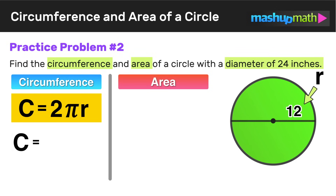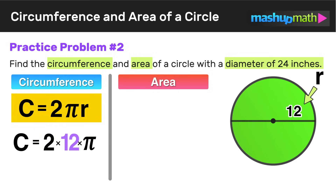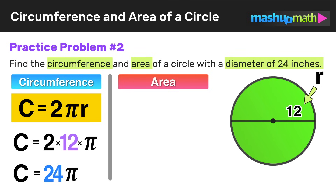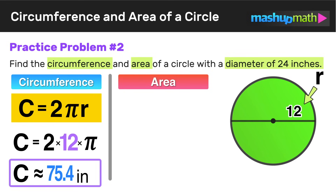Starting with circumference, we use the formula c equals 2 pi r. So c equals 2 times pi times 12. Using the commutative property, we rewrite this as 2 times 12 times pi. Since 2 times 12 equals 24, we can leave the answer in terms of pi: the circumference equals 24 pi. Or for an exact answer, multiply 24 times pi, giving approximately 75.4 inches.